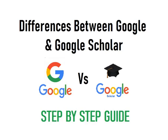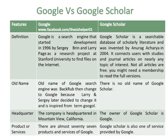Differences between Google and Google Scholar. Google is a search engine that started development in 1996 by Sergey Brin and Larry Page as a research project at Stanford University to find files on the internet.